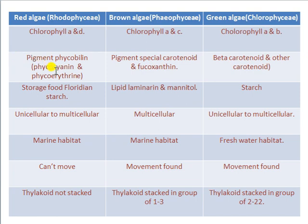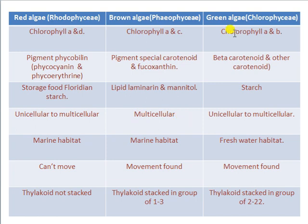Regarding stored food: red algae store floridian starch; brown algae store lipids, laminarin, and mannitol; green algae store starch. Red algae can be unicellular to multicellular; brown algae are always multicellular; green algae can be unicellular or multicellular. Red algae are always found in marine habitat; brown algae in marine habitat; green algae in freshwater habitat.